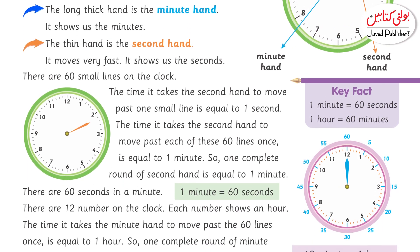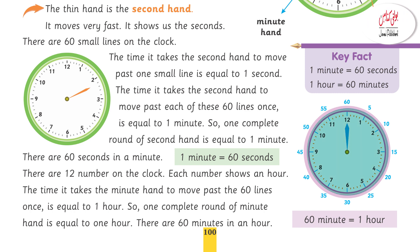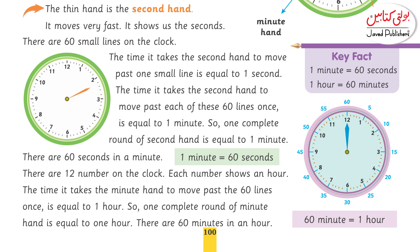Moving towards the conversion of time, you will tell students that if you convert 2 hours into minutes, you will multiply by 60. Like 2 multiplied by 60 minutes, and you will get the answer: 2 multiplied by 60 equals 120 minutes.